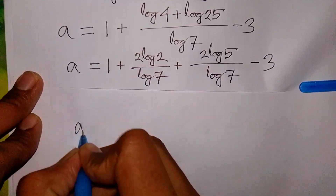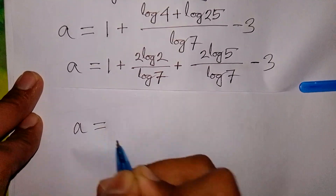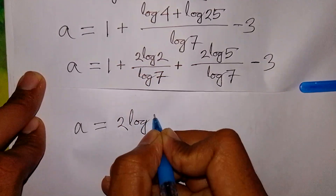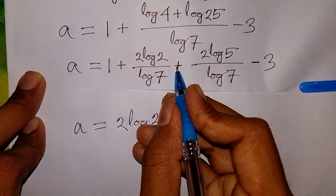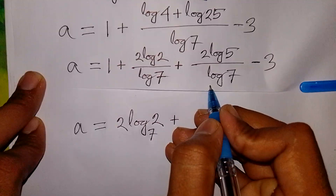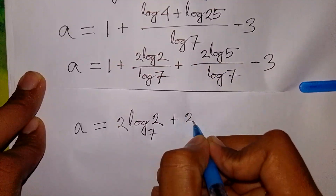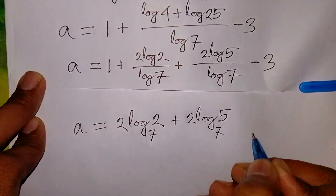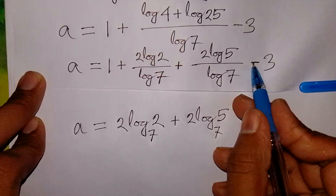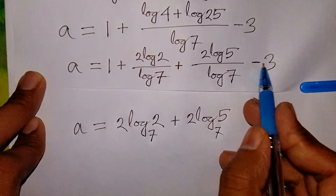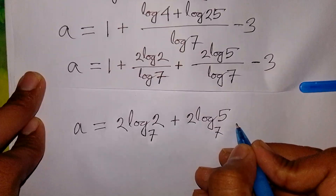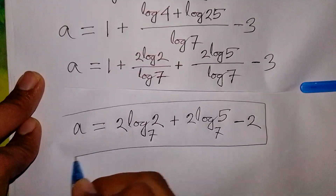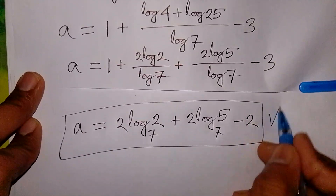Now, a equals 2 log 2 over log 7 plus 2 log 5 over log 7, plus 1, minus 3. Using the change-of-base rule, 2 log 2 over log 7 is 2 log₂ base 7, and 2 log 5 over log 7 is 2 log₅ base 7. Since 1 minus 3 equals negative 2, the final answer is a equals 2 log₂(base 7) plus 2 log₅(base 7) minus 2.